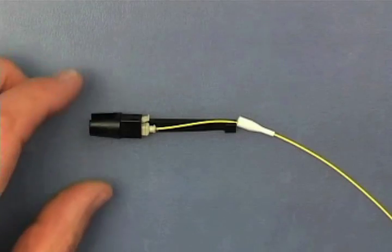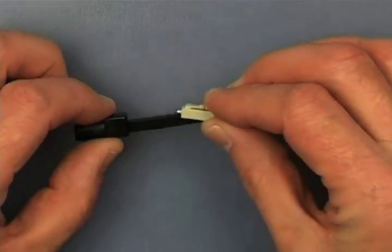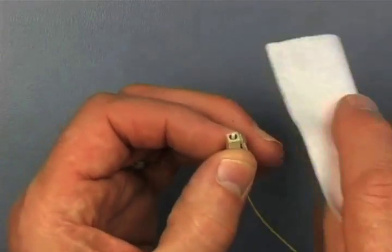Having removed the holder from the block, carefully remove the connector from the holder. Remove excess adhesive from the tip.